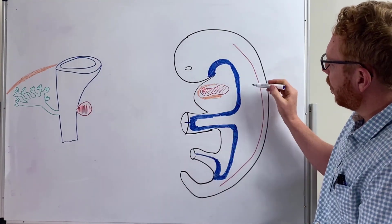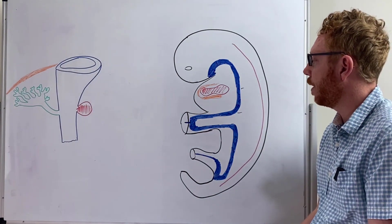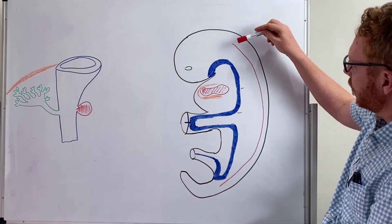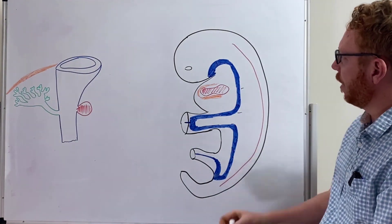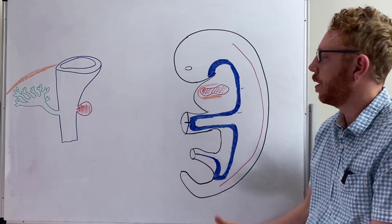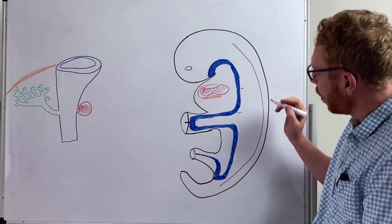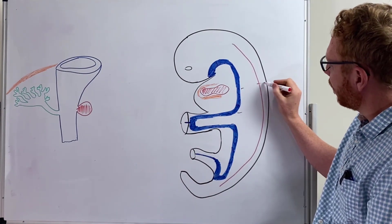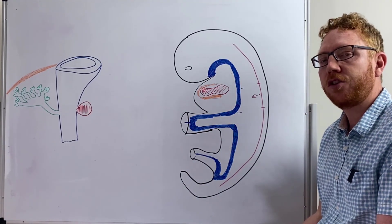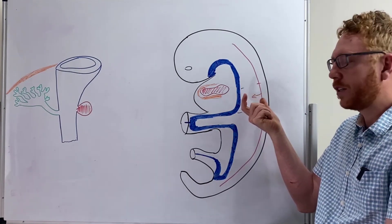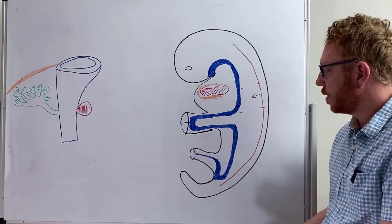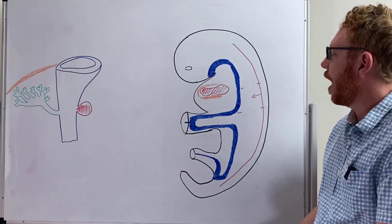What we're really focusing on is this section here — both the stomach and the duodenum developing. At the back is the dorsal aorta, which for today will develop into the abdominal and thoracic aorta. The important vessel supplying this part of the gut tube is the celiac artery, which supplies the foregut; the superior mesenteric supplies the midgut; and the inferior mesenteric supplies the hindgut. We're going to focus on the celiac artery today.